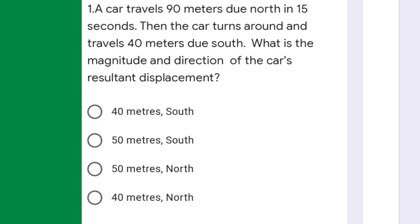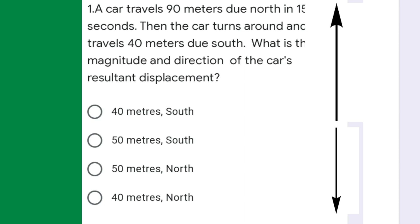In this question, a car travels 90 meters due north and 40 meters due south. First we'll draw the diagram: 90 meters due north and 40 meters due south. We have to take any one side as positive. Suppose we are taking north as positive, then south will be negative.